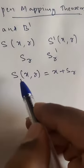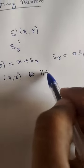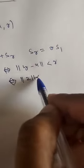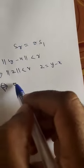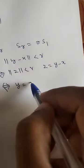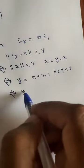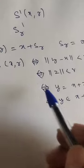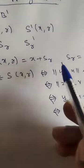To show this: Y belongs to S(X, R) if and only if the distance between Y and X is less than R, i.e., ‖Y - X‖ < R. Setting Z = Y - X, this holds if and only if ‖Z‖ < R, i.e., Y = X + Z with ‖Z‖ < R. Therefore Y belongs to X + S_R. Thus S(X, R) = X + S_R.